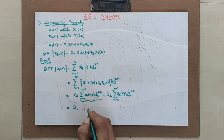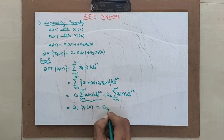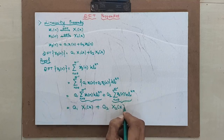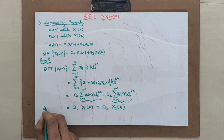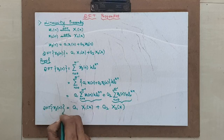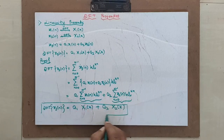Since a1 is a constant it comes outside, giving a1 times the summation of x1(n)·W_N^kn, which is x1(k), plus a2 times the summation of x2(n)·W_N^kn, which is x2(k). Hence DFT of x3(n) equals a1·x1(k) plus a2·x2(k). This is the proof — a simple proof you have come across many times.